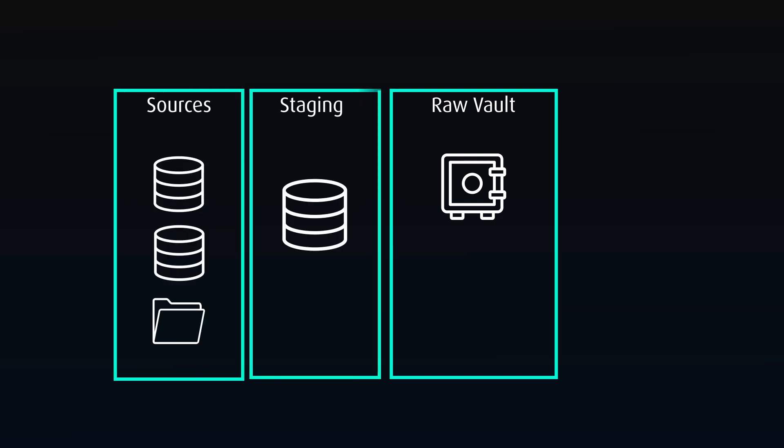There is a staging layer to hold and prep source data, which can handle batch processes as well as streaming data. Business rules and calculations can be applied to parts of the raw data and stored on a layer on top of the raw vault called the business vault.